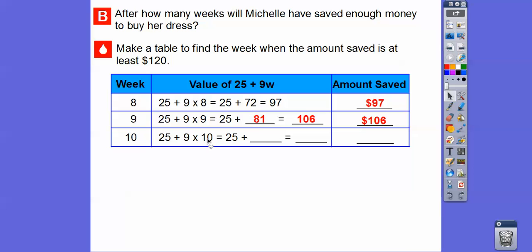So let's try 10 weeks. We're going to go ahead and plug in 10 in for w. 25 plus 9w is 25 plus 9 times 10. So we're going to multiply 9 times 10 first. That gives us 90. So 90 plus 25 is 115. Still not enough.